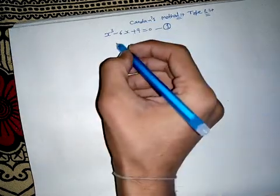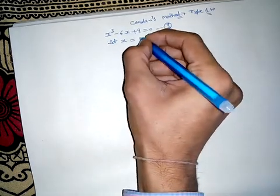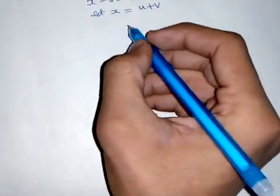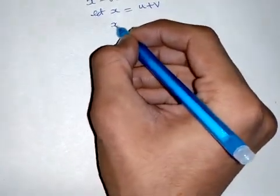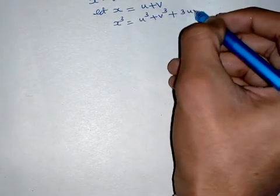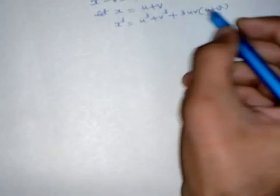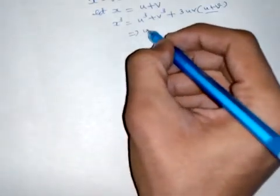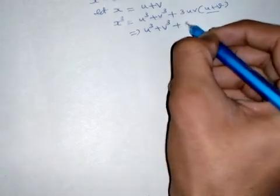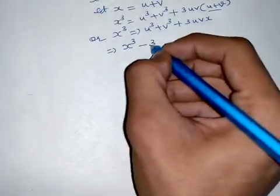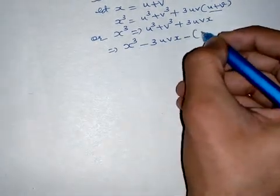Now let x be equal to u plus v. Cubing on both sides, x cubed is equal to u cubed plus v cubed plus 3uv into (u plus v). Since u plus v equals x, this gives x cubed equals u cubed plus v cubed plus 3uv·x.